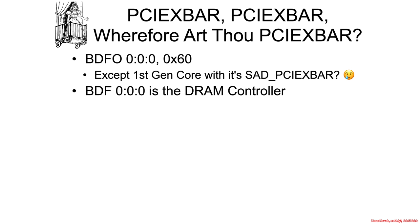PCIe XBAR is typically at BDF 000, offset 60h. Other than the first-generation Core where I can't find it — probably because documentation got disrupted during the transition — BDF 000 is the DRAM controller. It kind of makes sense that the memory controller is responsible for setting up this big chunk of memory-mapped IO.